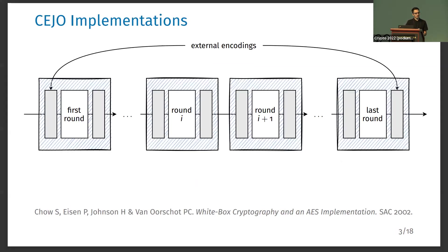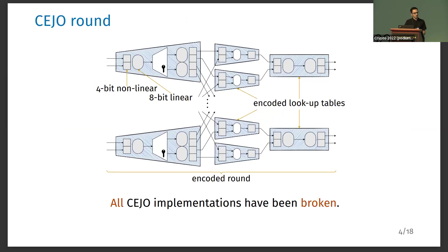The first and last encodings are not cancelled — they are called external encodings. They introduce some usability problems because they make the implementation not functionally equivalent to the underlying cipher, but they are needed for security. Without them, cipher implementations are easy to break. To build a cipher implementation, one needs to choose the size of the round encodings and implement the encoded rounds in a way that the round key material cannot be extracted.